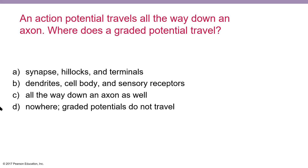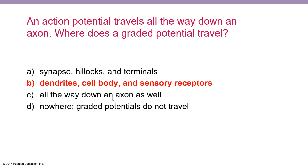Remember, they are still traveling — they are just dissipating as they travel. And so the correct answer is going to be B, as the majority of you selected. So that is dendrites, cell body, and sensory receptors.